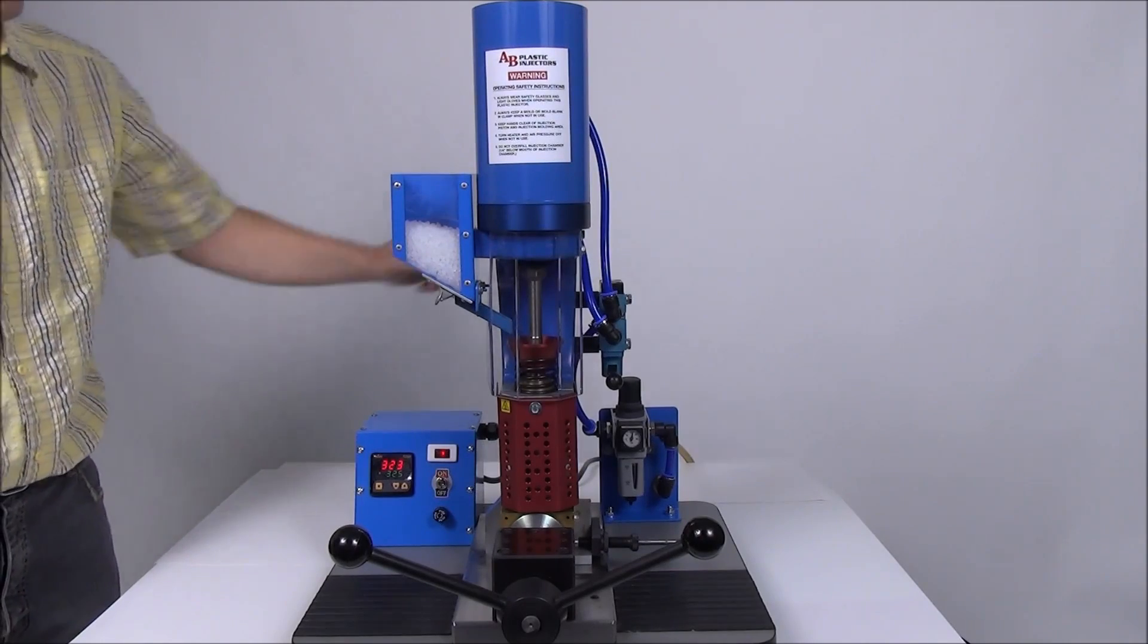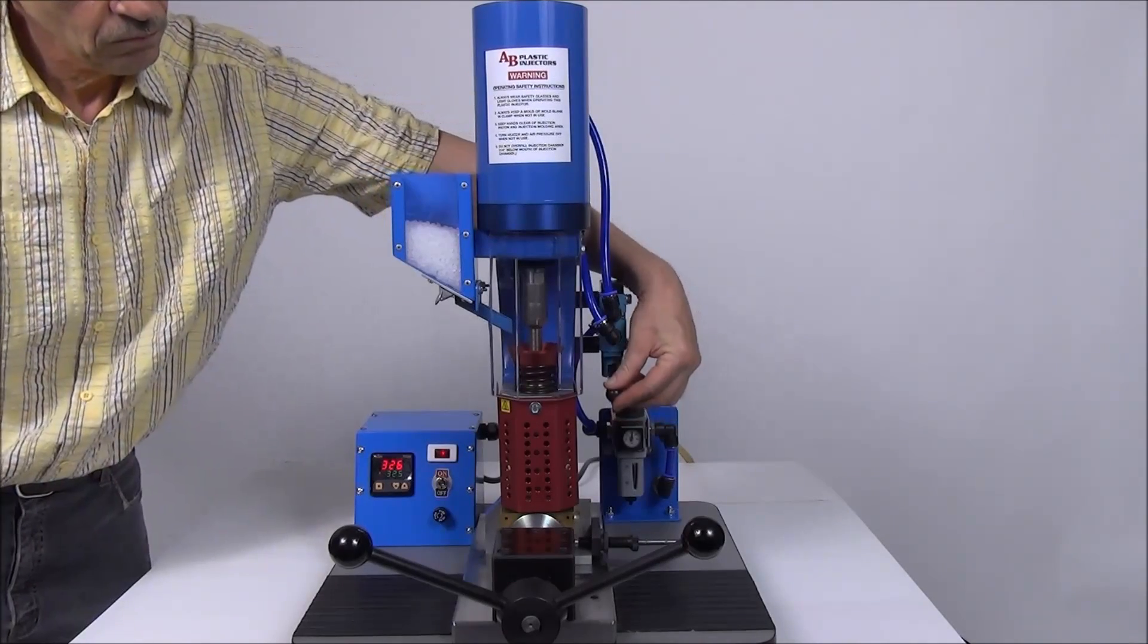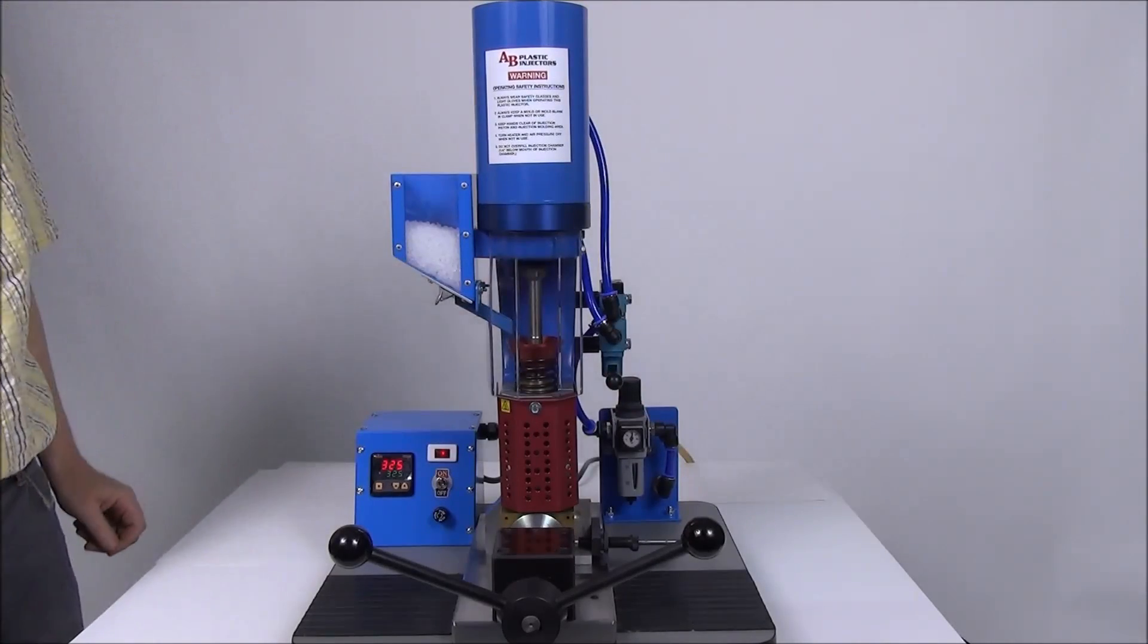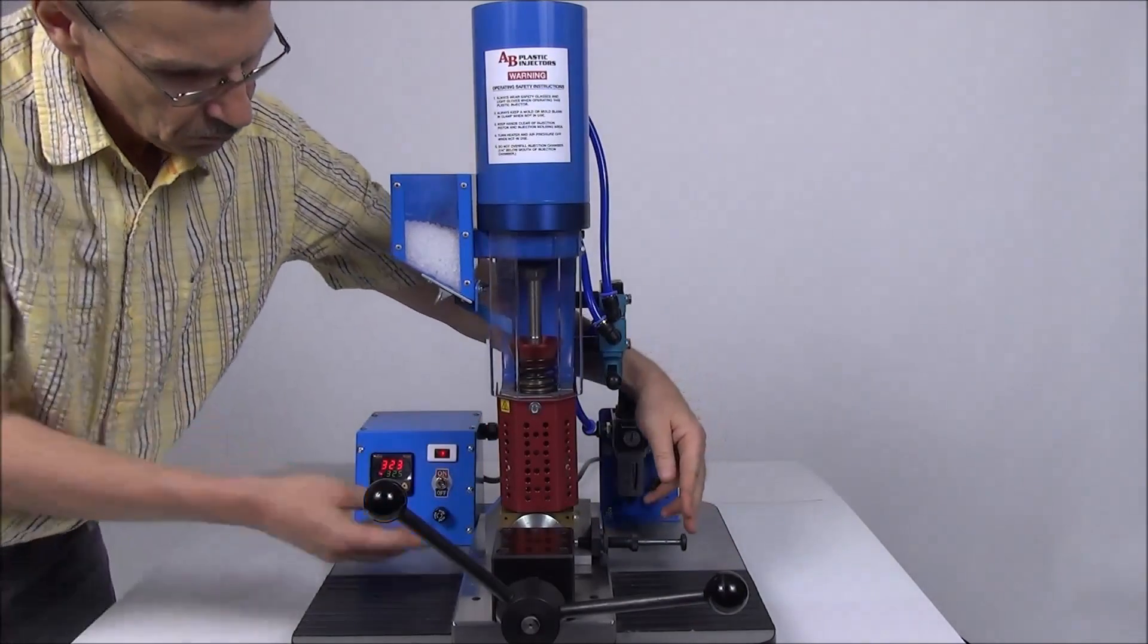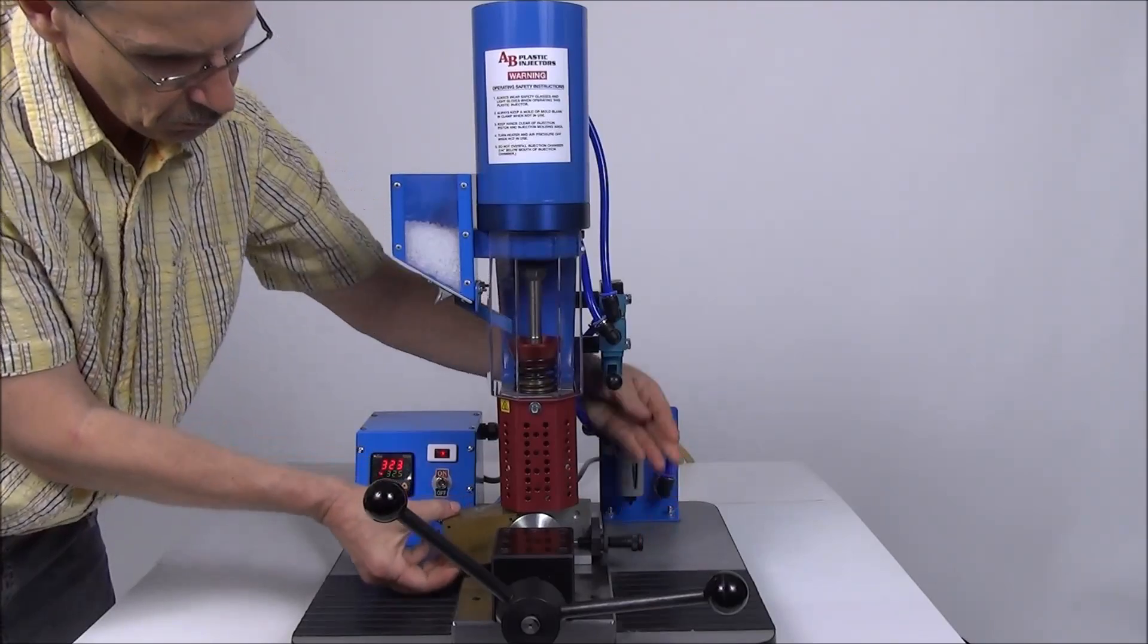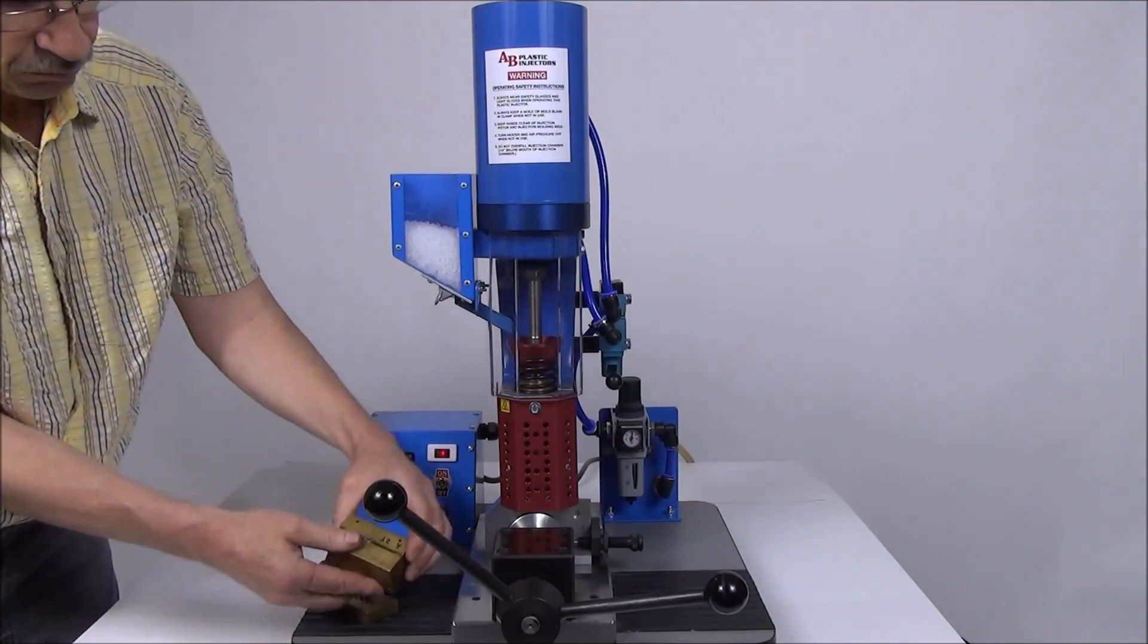Press down on the injection plunger lever. Hold the lever until the plunger stops and the mold is filled. Open the clamp. Then use the mold stop ejector to move the mold from the injection area. The operator can now remove the part and close the mold to prepare for the next injection.